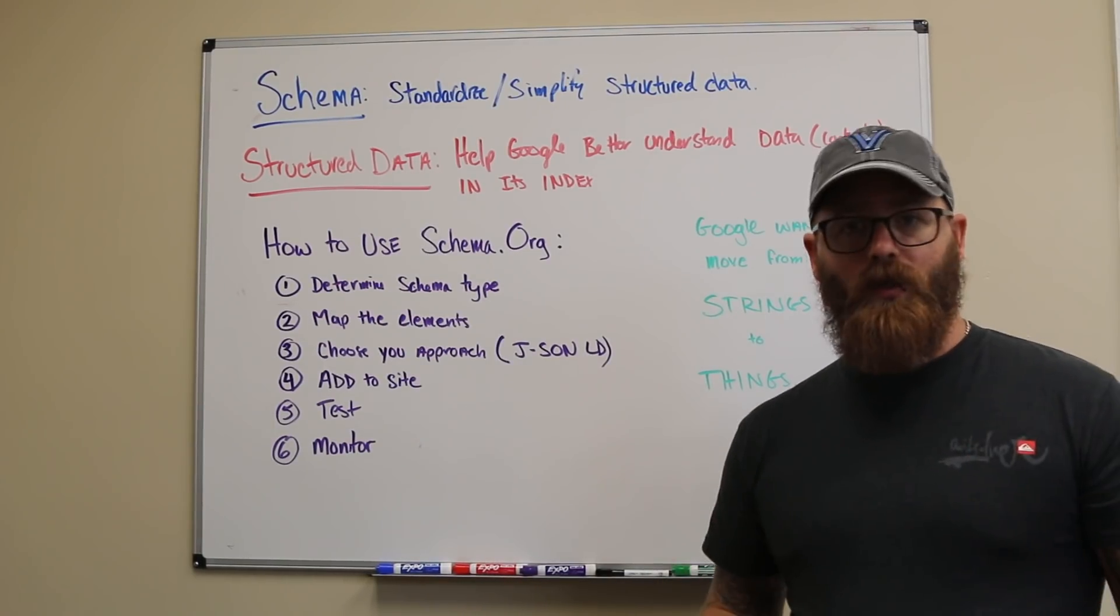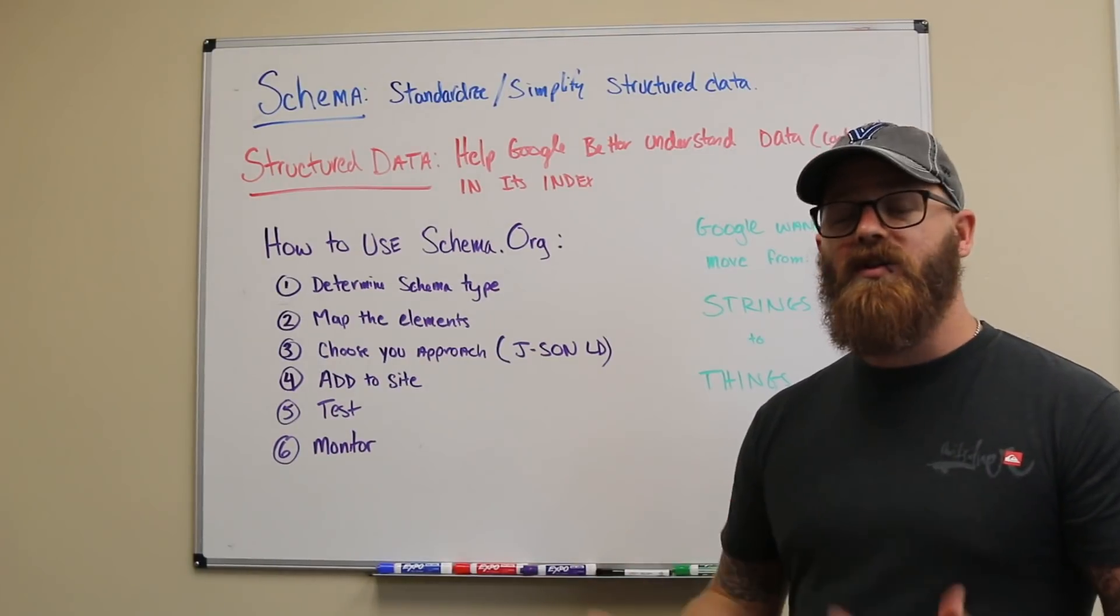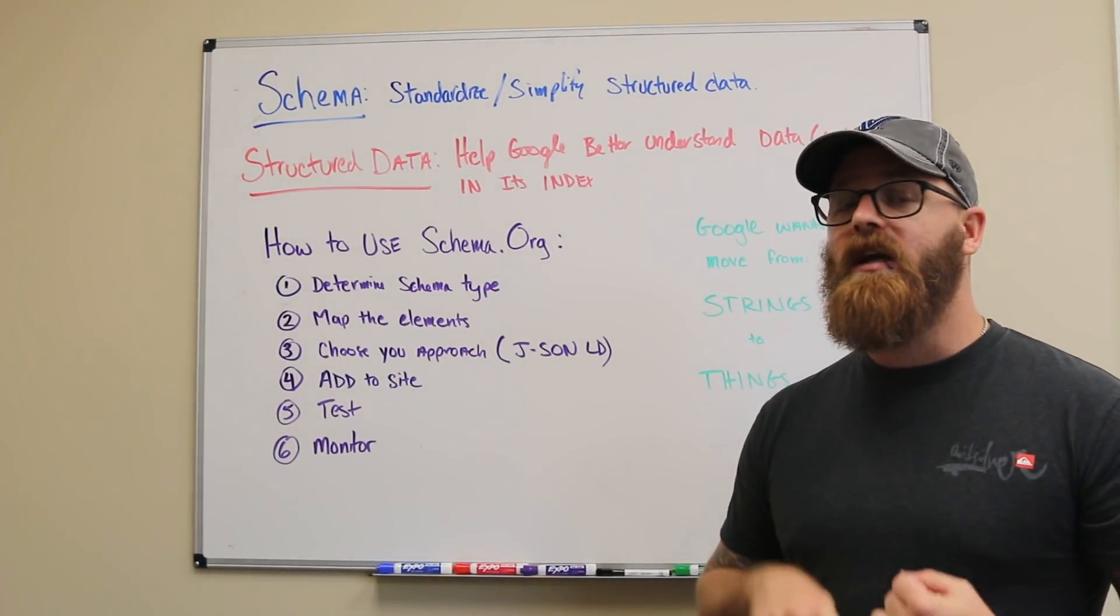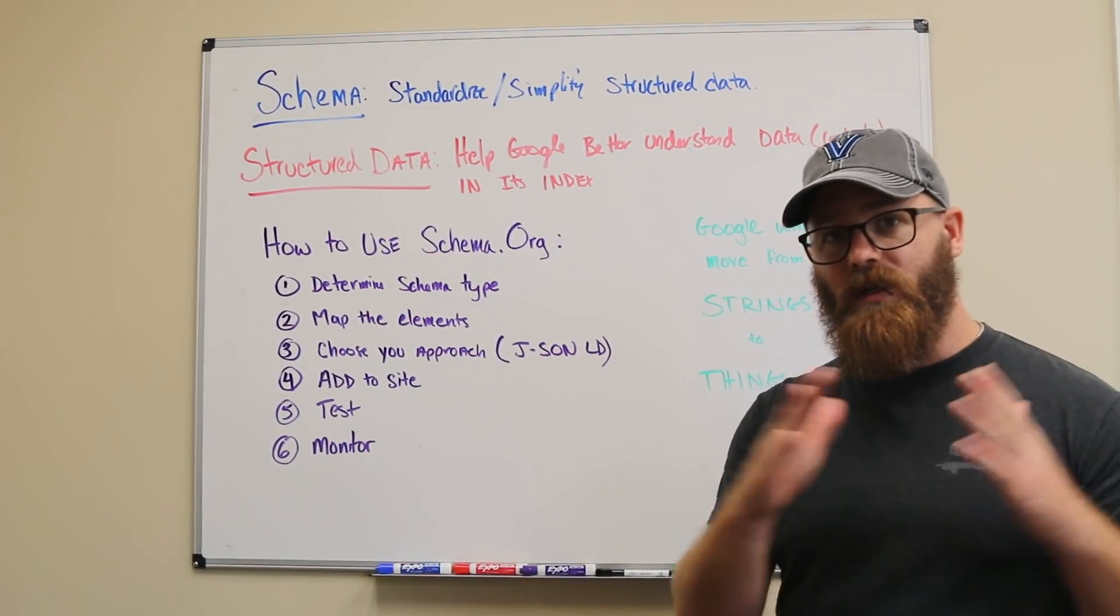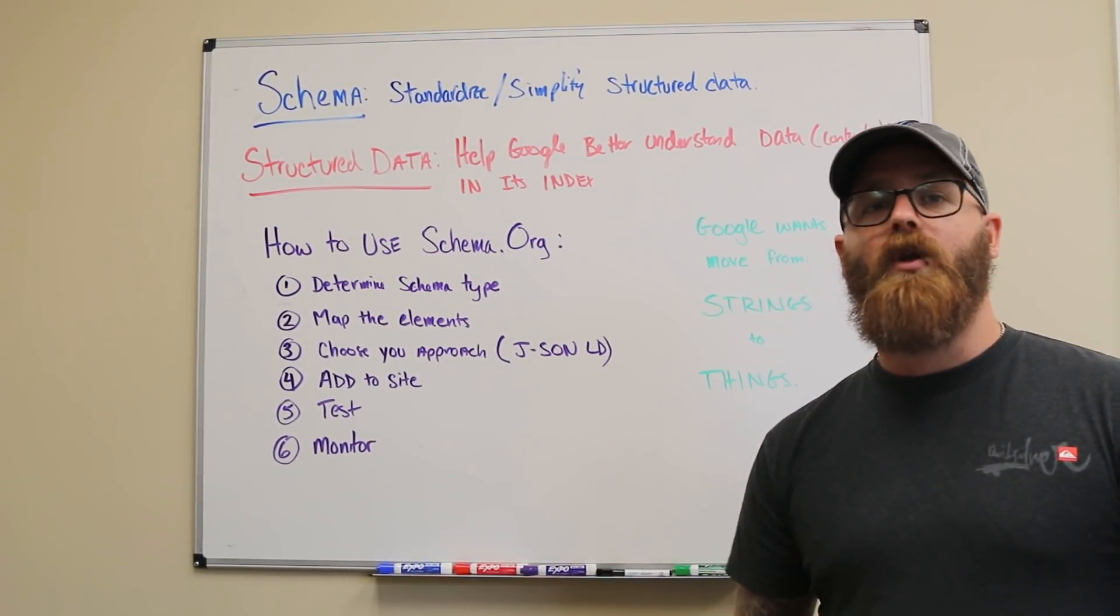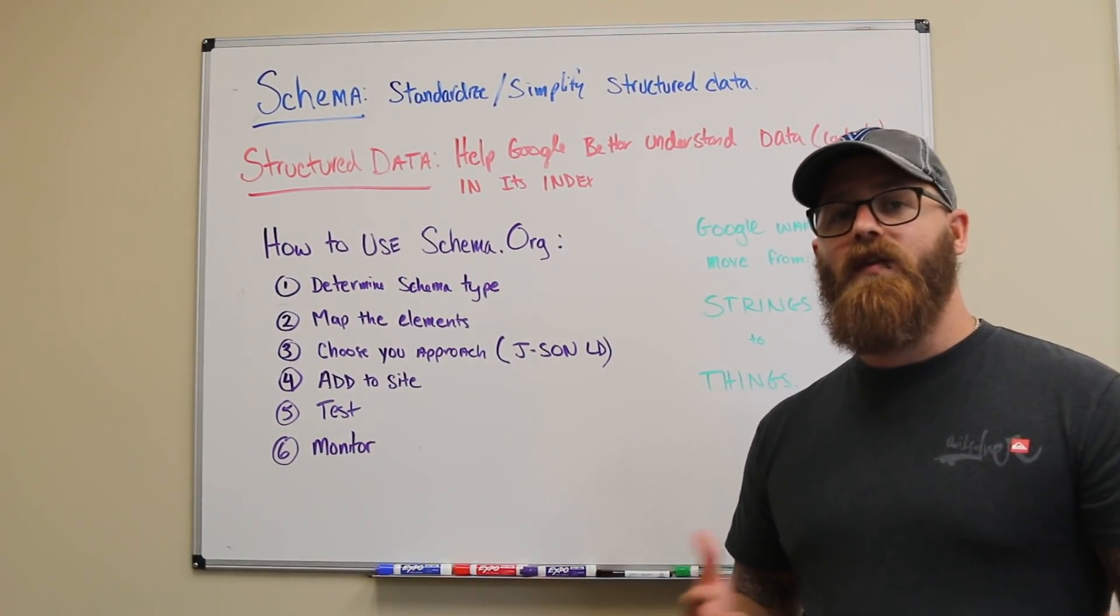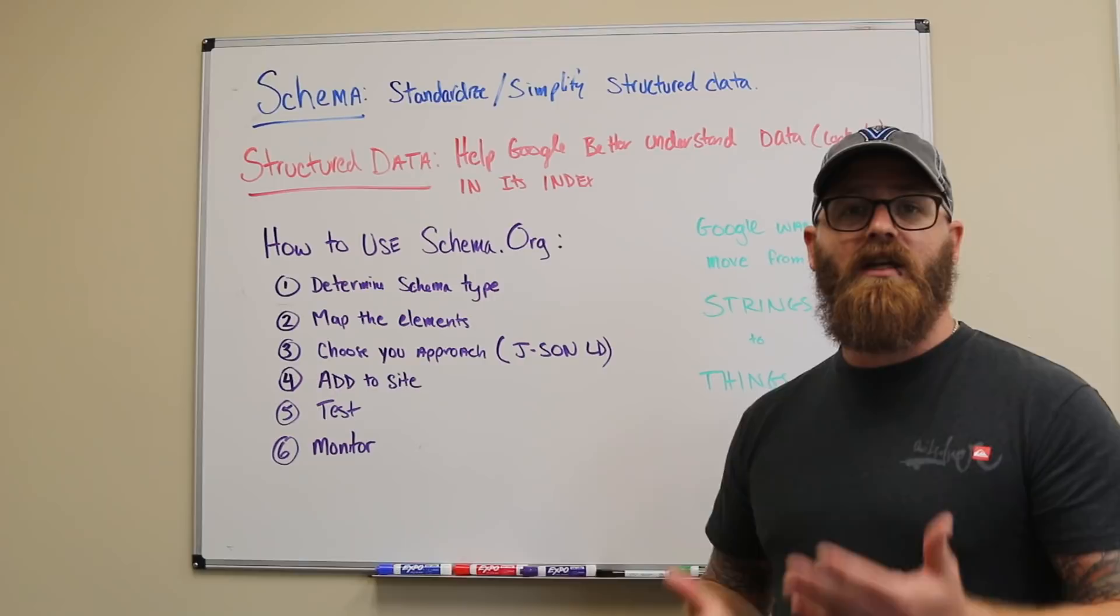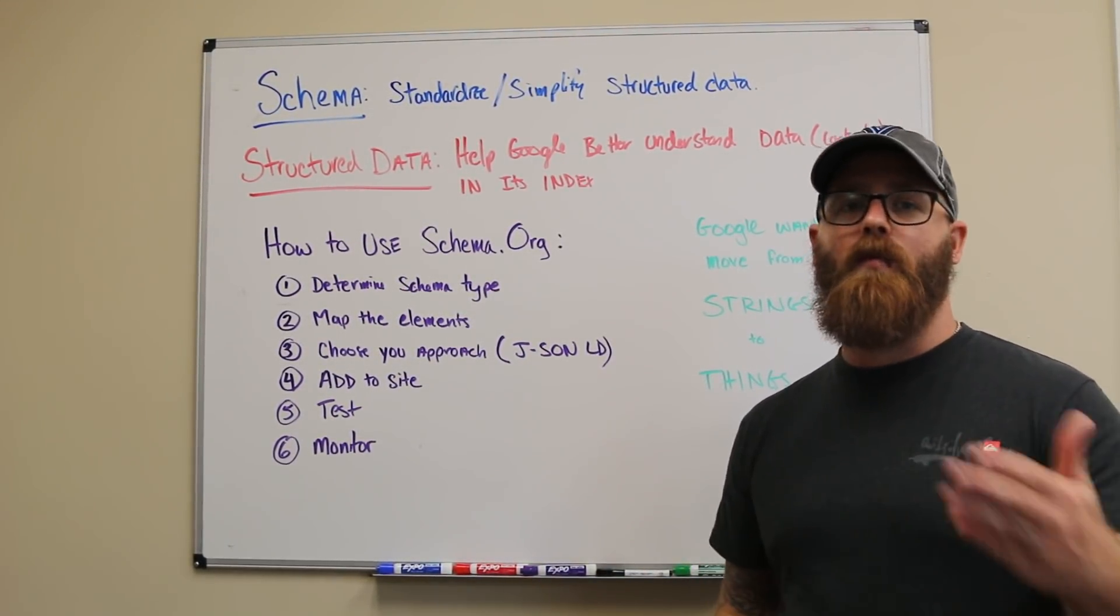The last thing you're going to do is monitor. So after you've added the structured data, you want to monitor its impact. One of the areas that you want to do is you want to add an annotation in your Google Analytics. So inside of Google Analytics, you open it up and you can just on the timeline of your search traffic, put a little note in there so you know when you've added structured data to your site. Another thing you want to do is make sure you're monitoring this in Google Search Console. So let's take a little bit of a deeper look at how that actually looks from a practical standpoint.